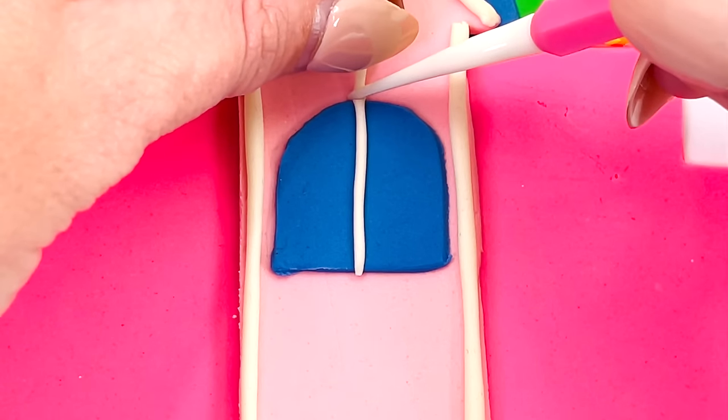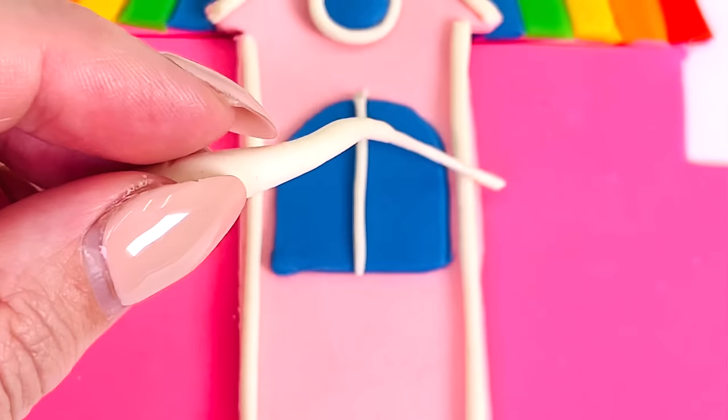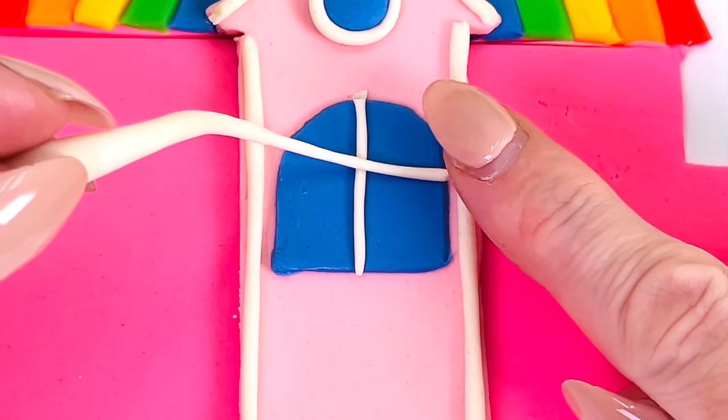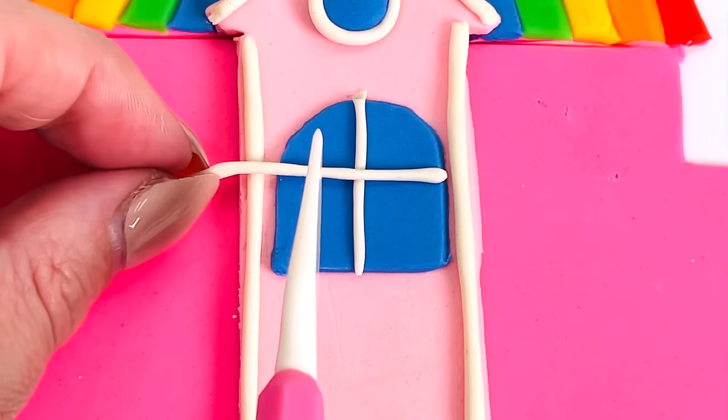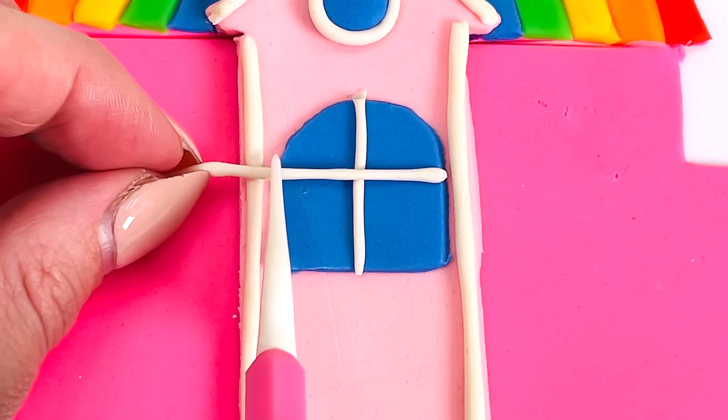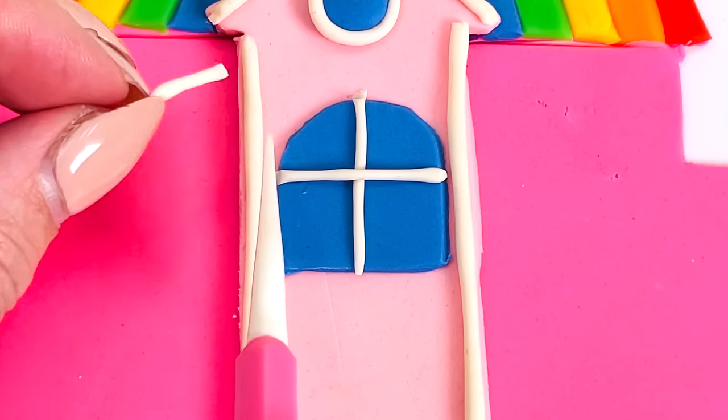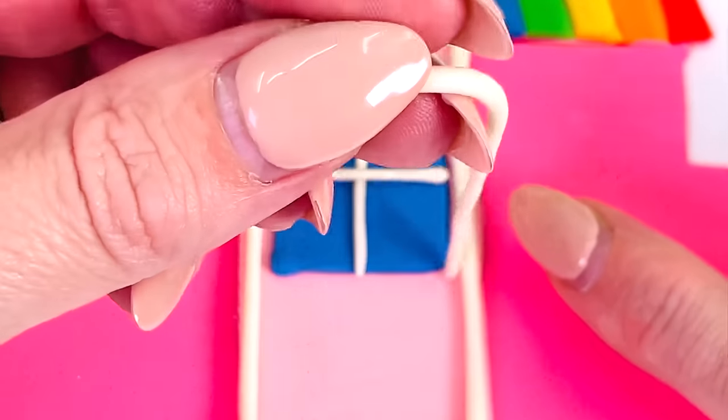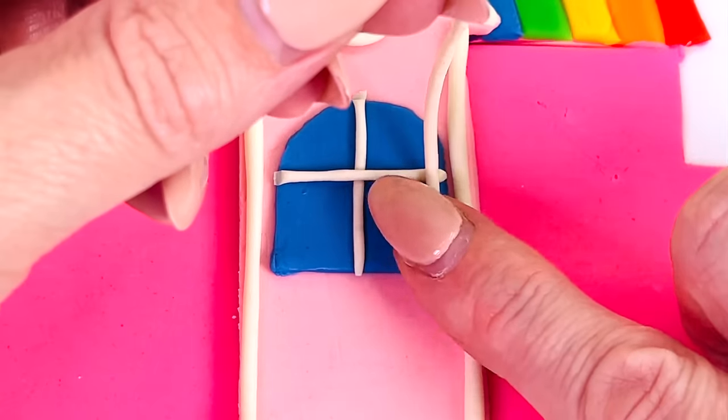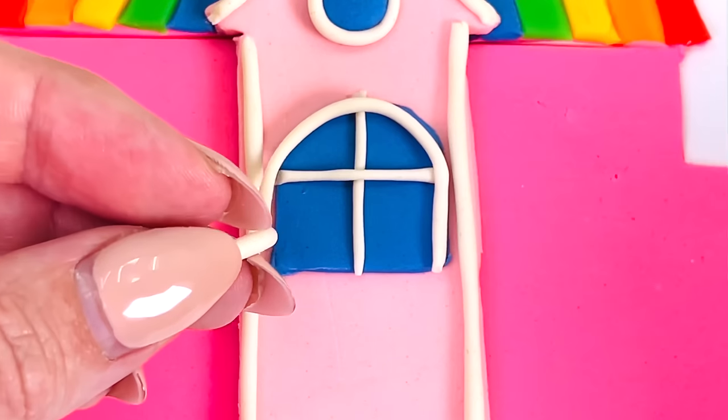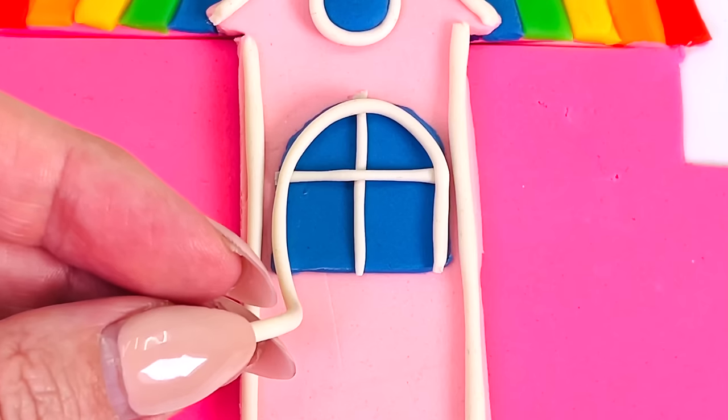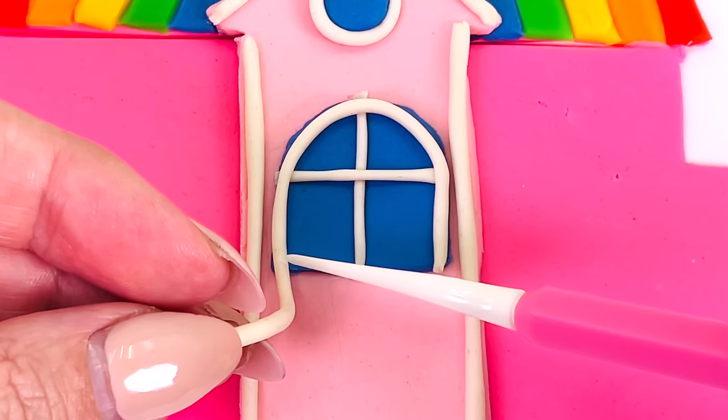Now I can put the detail on. I'll put a white line here, and one going across. That's horizontal. And cut it here. Great. And then some white all the way around the arch of the window. Looking good.